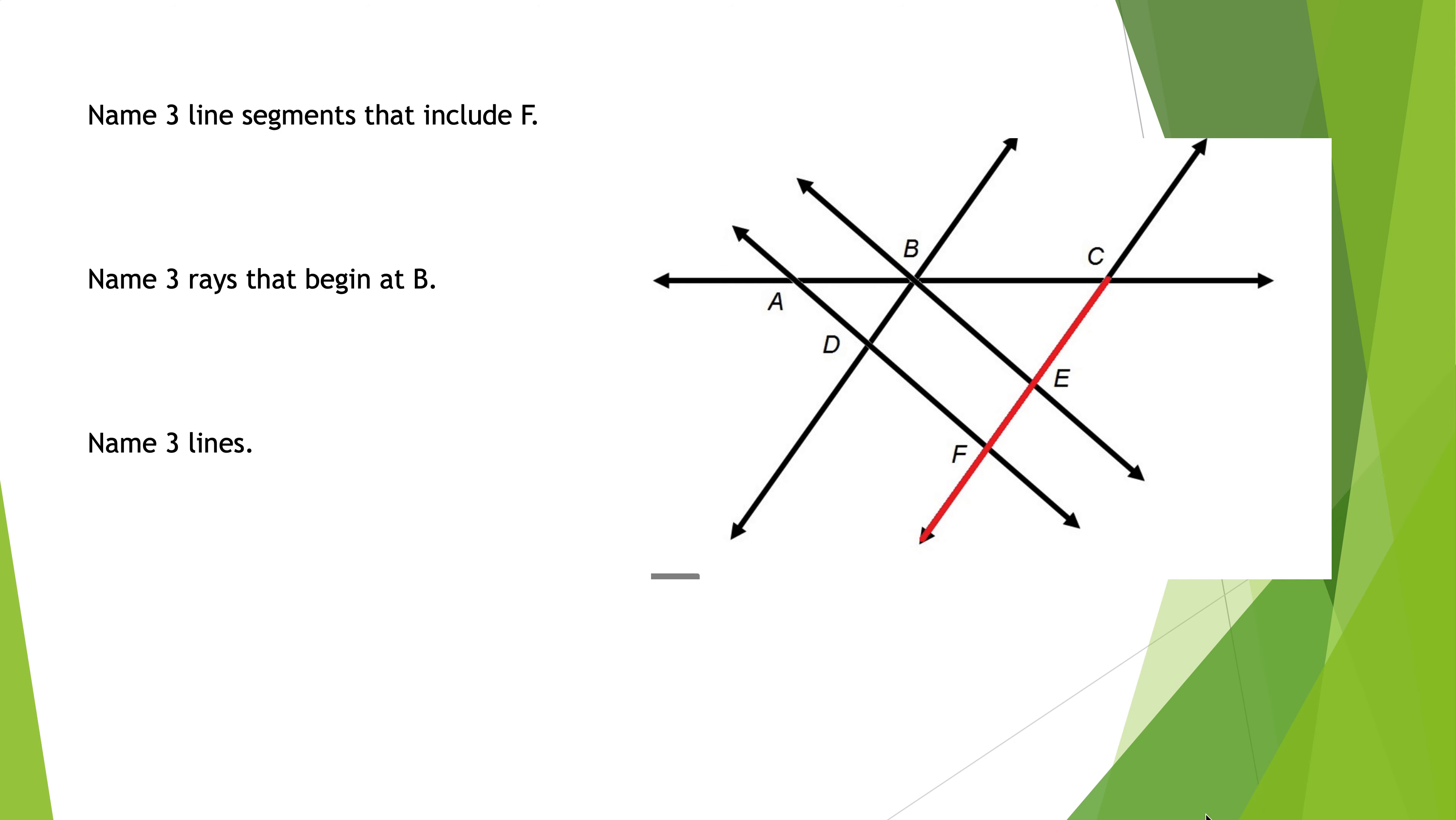Okay, name three line segments that include F, three rays that begin at B, and name three lines. Stop and start time. Go ahead.